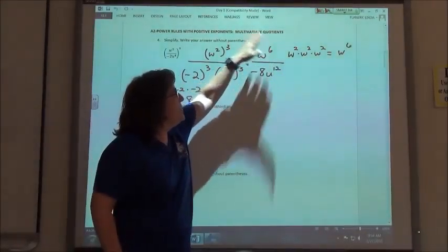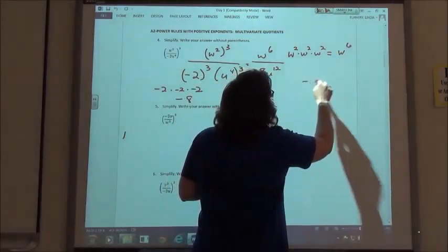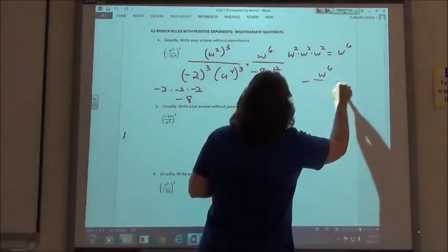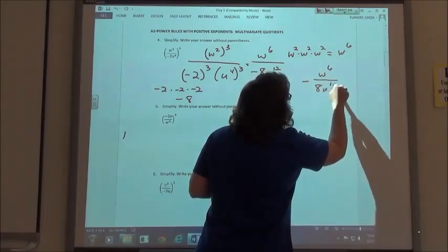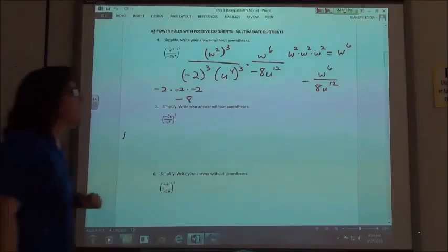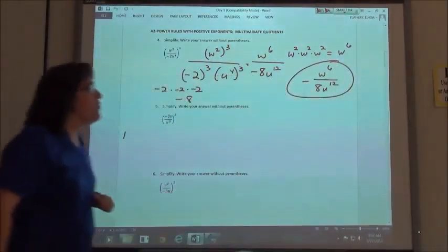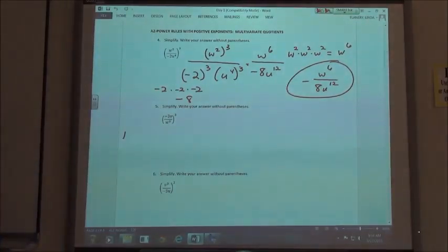Now if I have a positive over a negative, that makes my whole fraction negative, so I have negative w to the sixth over 8u to the twelfth. If you put it in with the negative on the bottom, the Alex program will say it's correct. However, the negative really should be out in front of your fraction, not on the top or the bottom of your fraction.